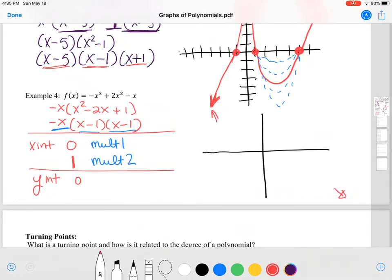Because I don't have any unusually large numbers here, I'm just going to do it on a scale of 1. Okay, so I have a y-intercept at 0, I also have an x-intercept at 0 and an x-intercept at 1.